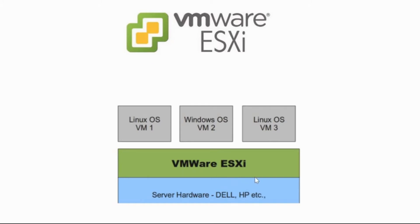This is based on the hypervisor architecture. A hypervisor is a piece of software that creates and runs virtual machines. Once we install VMware ESXi, you can directly create virtual machines on top of it. ESXi provides a virtualization layer that abstracts the CPU, storage, memory, and networking resources of a physical host into multiple VMs.